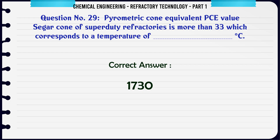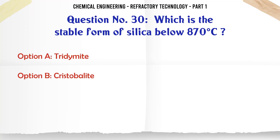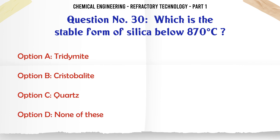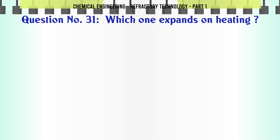Which is the stable form of silica below 870°C? A. Tridymite, B. Cristobalite, C. Quartz, D. None of these. The correct answer is Quartz.